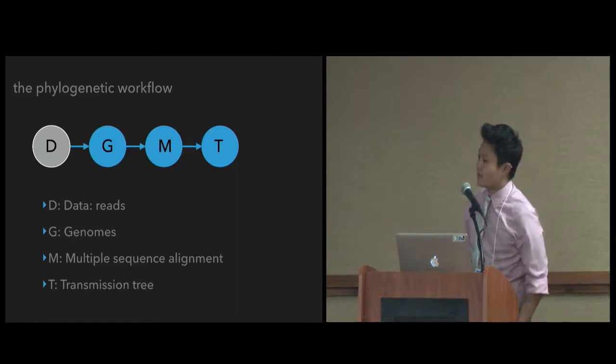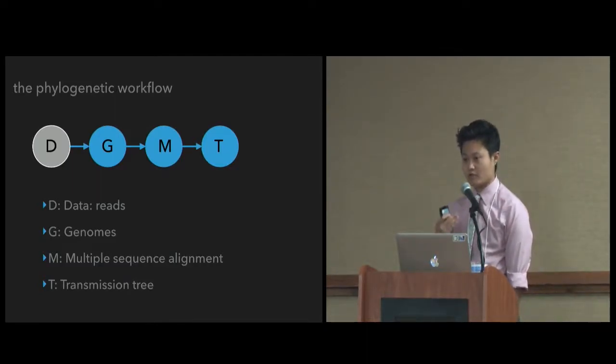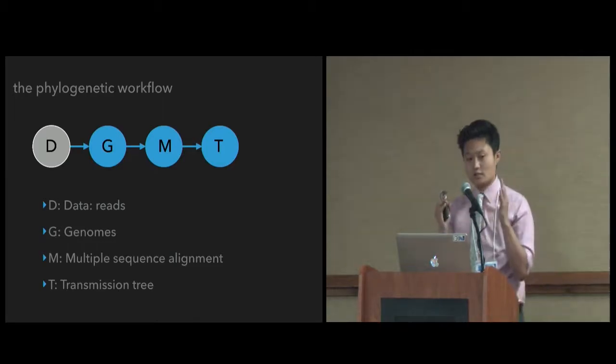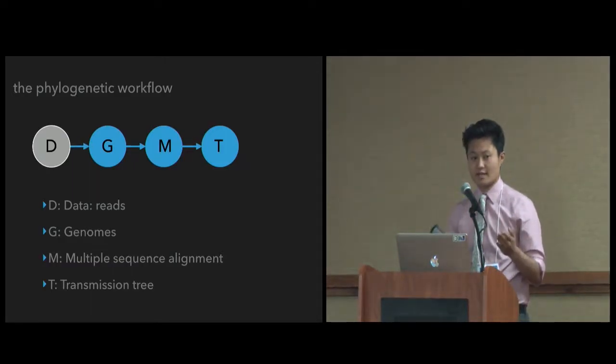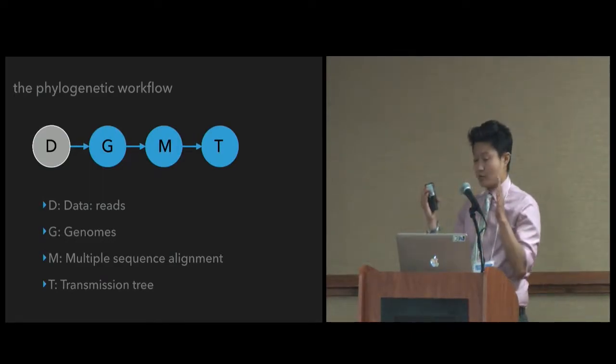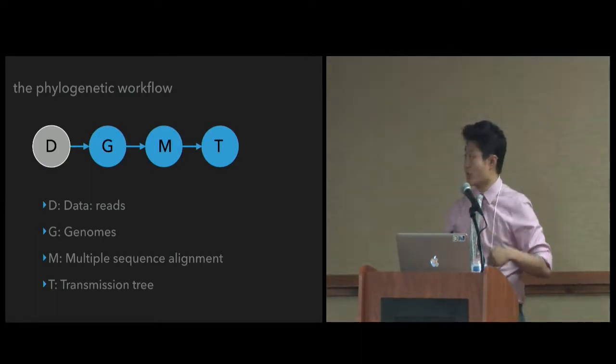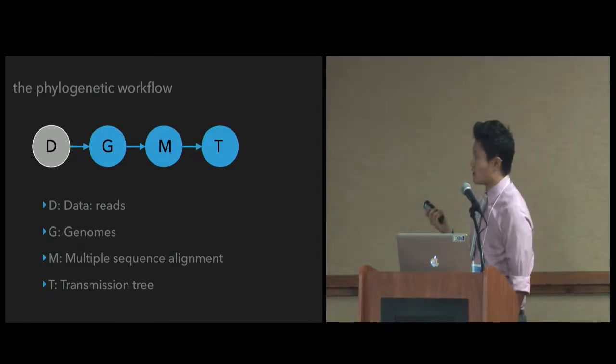So this leads us to the phylogenetic workflow, which is what my dissertation is on. Essentially, there are several steps involved in terms of building these phylogenetic trees. We have to start from data or sequencing reads. These reads are like 100 base pair to like 250 base pair fragments of the genome due to technical reasons. We have to do this step called assembly to build these genomes. From the genomes, we try to align them. We find the positions at which the base pairs go together best. We build a multiple sequence alignment. And then finally, from this multiple sequence alignment, we can build the transmission tree.